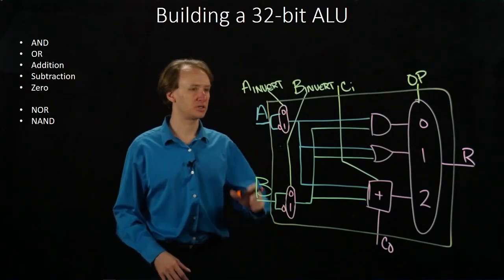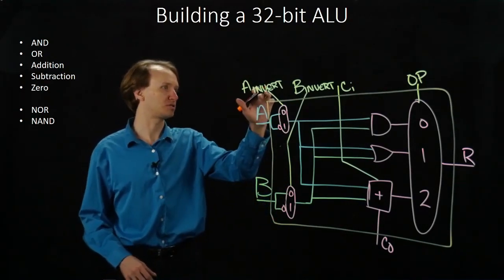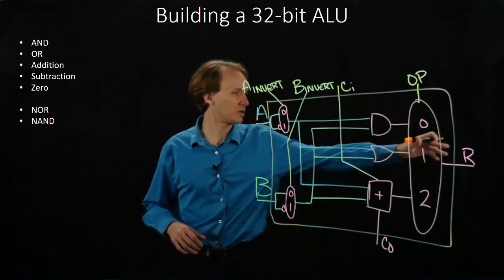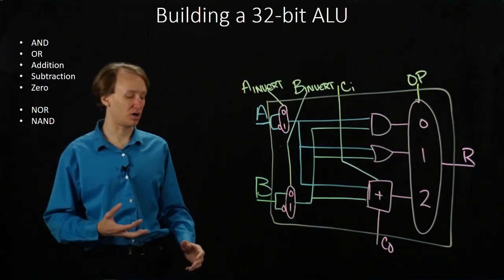So I've got several inputs here. I've got A, B, as well as A invert, B invert, carry in, and my operation. And I get a result and a carry out out of this box.